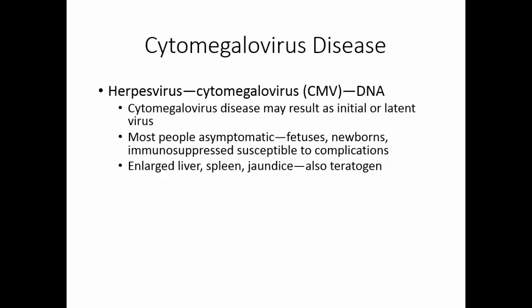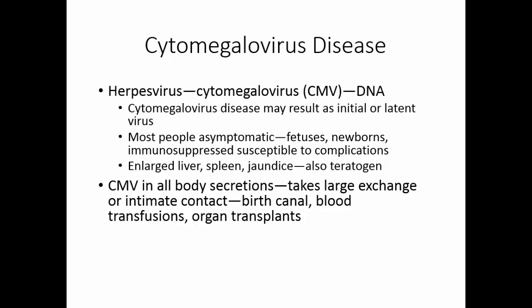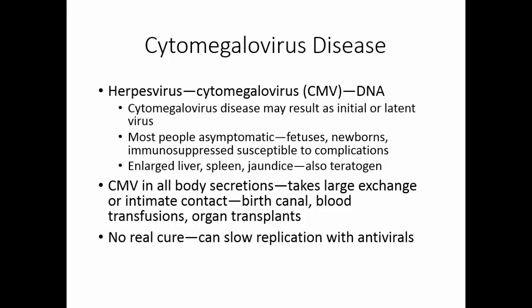Cytomegalovirus is also a teratogen — in pregnant women it can cross the placenta and cause malformations of the fetus. The virus is found in all body secretions, but appears to require a large exchange or very intimate contact to transmit. It can be transmitted to the fetus in the birth canal, through blood transfusions, and through organ transplants. There is no real cure; several antiviral drugs can slow replication. Prevention is primarily practicing safe sex, as the primary transmission route is sexual contact.